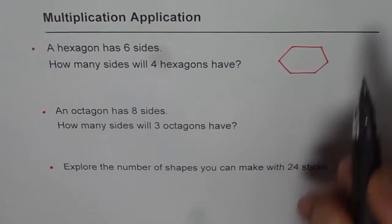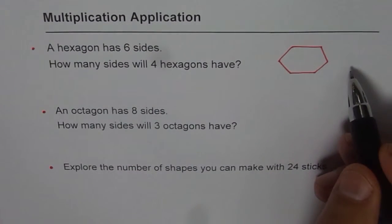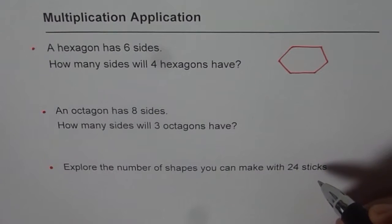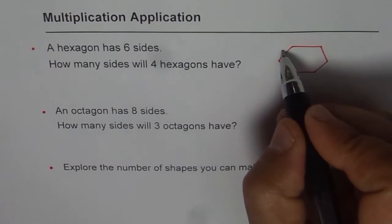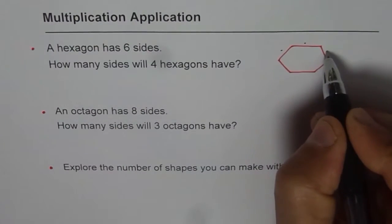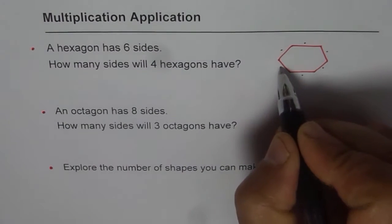For four, we can make four of these and then count the number of sides. That's one way, right? So we say, well, this is one, two, three, four, five, six.